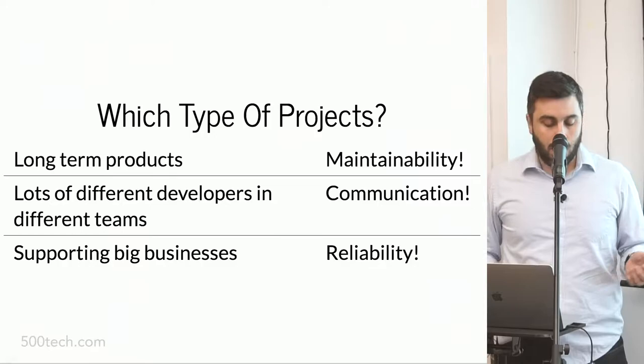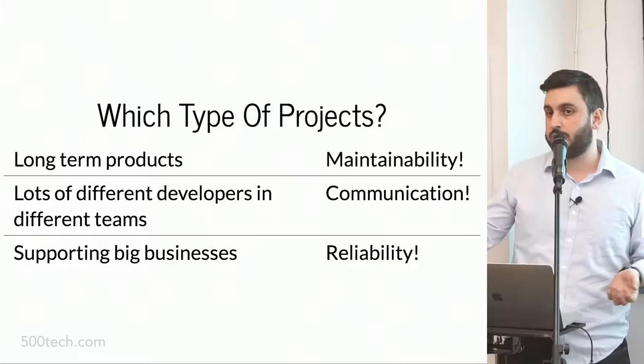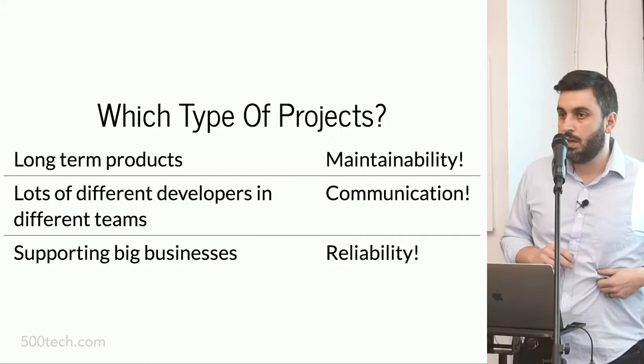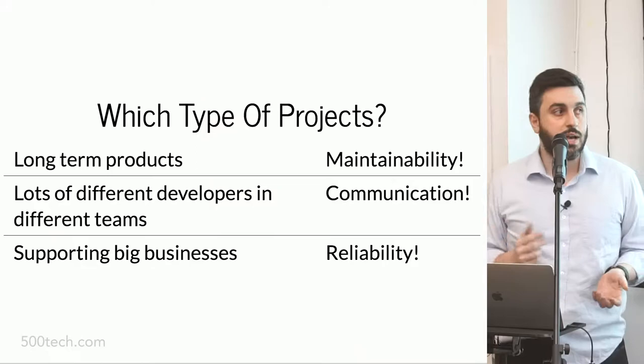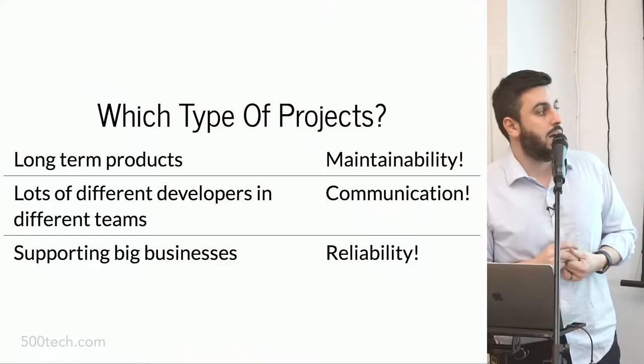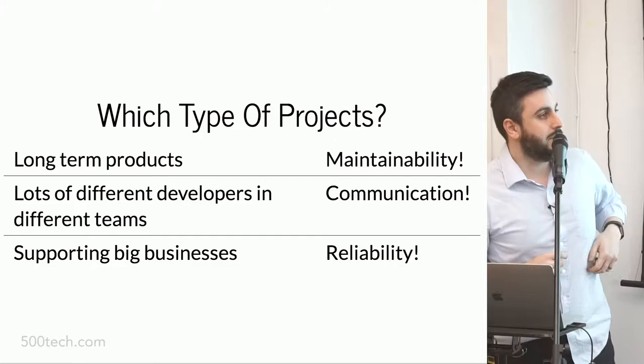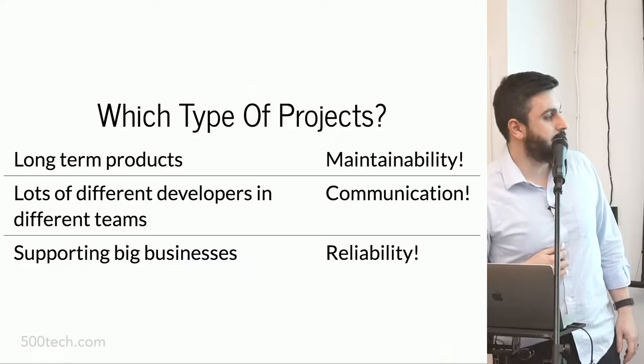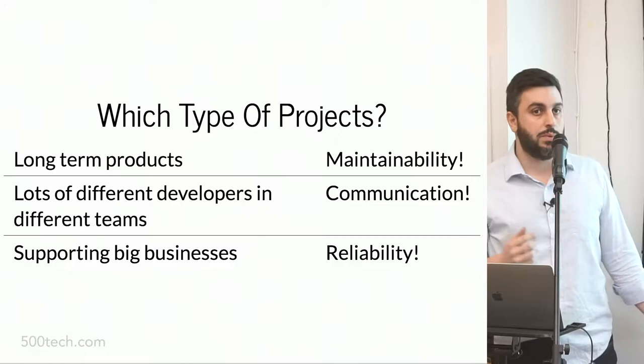We always have to be thinking about maintainability, because this project is going to be around for years. We need to think about communication — other people are going to change your code, they need to understand what's happening. You're going to change this code in six months, and in six months I am a completely different person regarding coding. And it needs to be reliable — it can't break, and whenever we find a problem we need to fix it, because it's big money on the line.